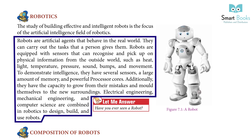Robots are equipped with sensors that can recognize and pick up on physical information from the outside world, such as heat, light, temperature, pressure, sound, bumps, and movement. To demonstrate intelligence, they have several sensors, a large amount of memory, and powerful processor codes. Additionally, they have the capacity to learn from their mistakes and adapt themselves to new surroundings.